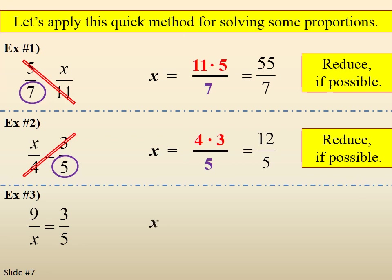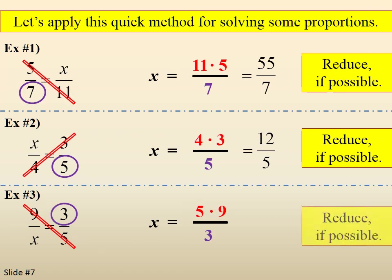So in this case, x equals a fraction where the numerator is 5 times 9 and the denominator is 3. In this case, we can reduce, and we end up with 15.